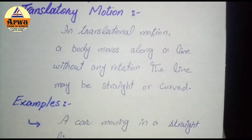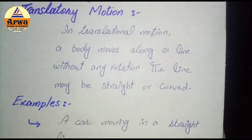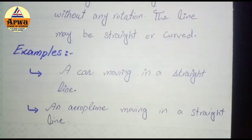Isko ek example se discuss karte hain. Example hamare paas hai: a car moving in a straight line — car bilkul straight line mein move kar rahi hai, to hum kahenge ki iska translational motion hai. Similarly, an aeroplane moving in a straight line ka bhi translational motion hai.